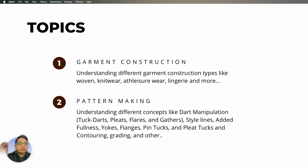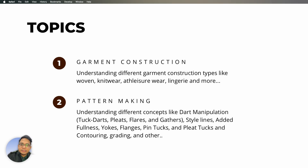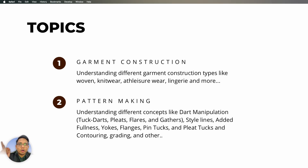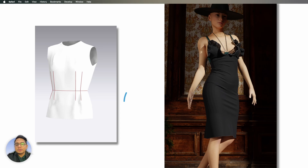The key topics for 3D modeling are garment construction and pattern making. Understanding different kinds of garments, how they are constructed, and how their patterns are made is essential. This includes concepts like dart manipulation, flares, gathering, style lines, adding fullness, yokes, tucks, pleats, and grading. These topics are all highly important for the first stage: modeling.